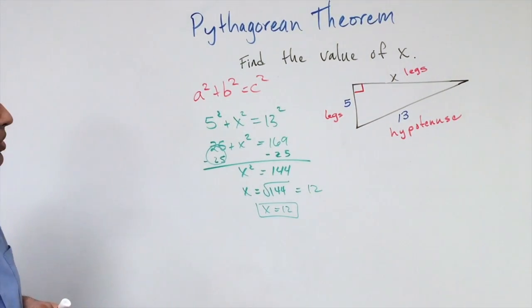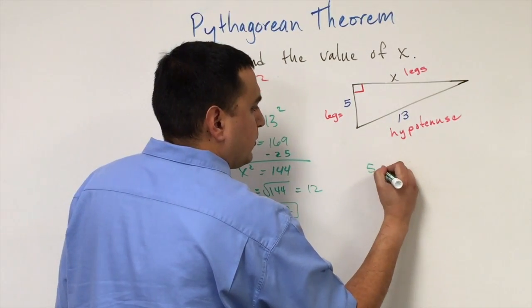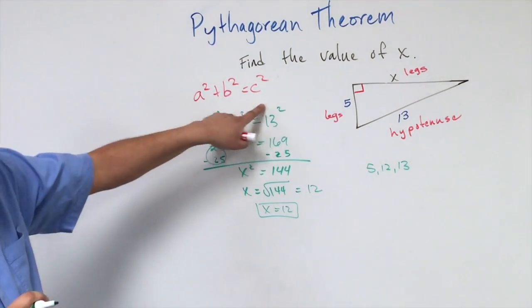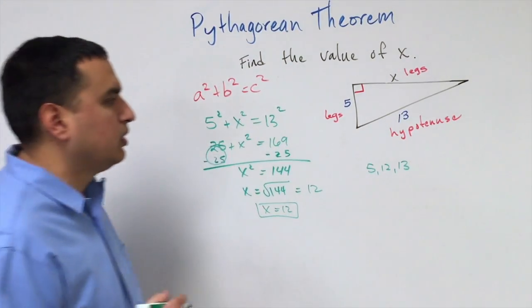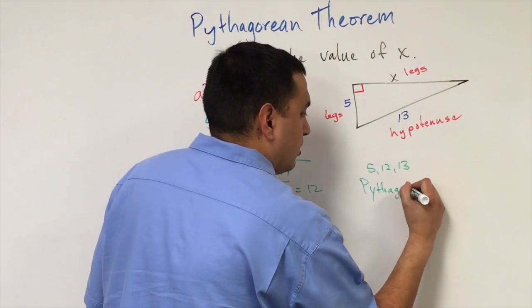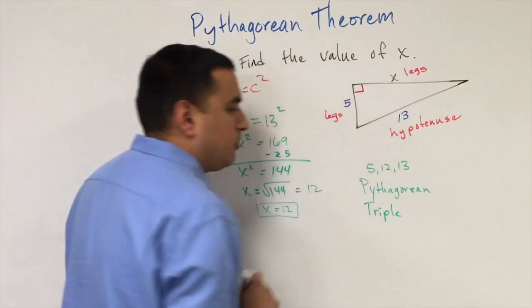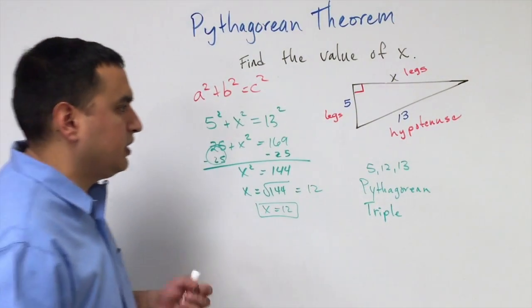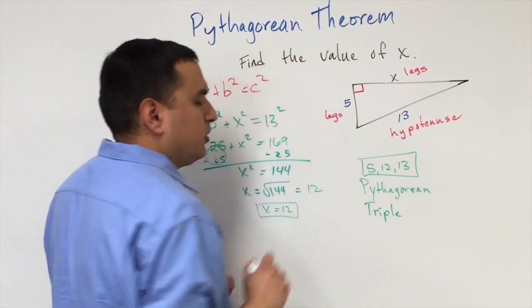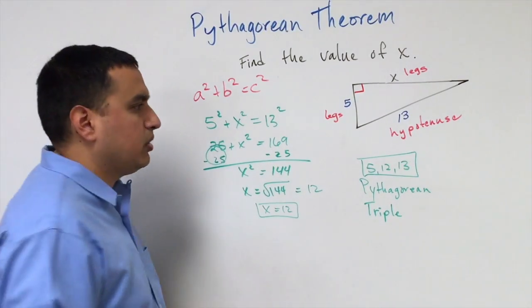Something you may or may not remember: if you have three positive integers like this, like we do in this case where it's 5, 12, and 13 that make this Pythagorean theorem statement true, this is what's called a Pythagorean triple. There are more than one, several of them, an infinite amount. Anytime you have three whole numbers that work nicely and neatly into this formula, we call it a Pythagorean triple.